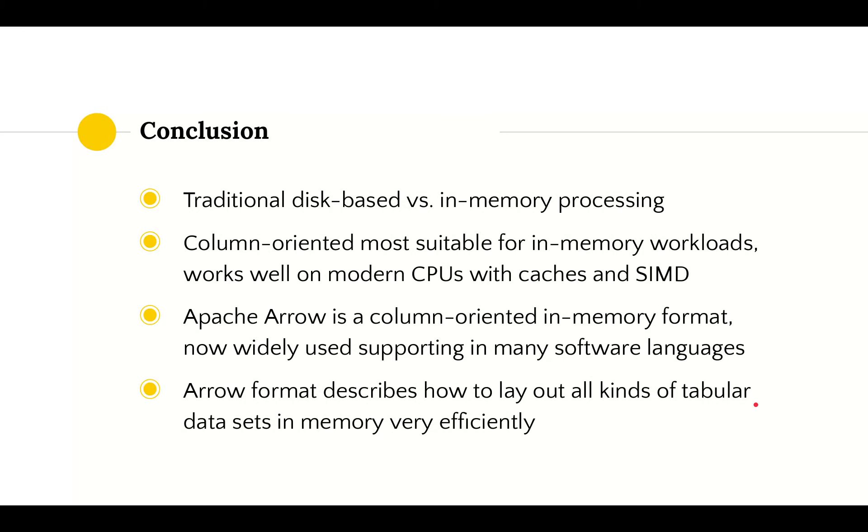We conclude this lecture by looking back for a second. We talked about traditional disk-based methods of data analytics versus relatively new in-memory processing methods. We've seen that a column-oriented layout of data is often most suitable for workloads typical of in-memory processing, because it works well on modern CPUs with caches and SIMD. We've also looked at the Apache Arrow project that provides a columnar in-memory format that is widely supported in many programming languages, and even in GPUs and FPGAs. We've delved deeper into the Apache Arrow format by looking at how specific types of information are efficiently laid out in memory.